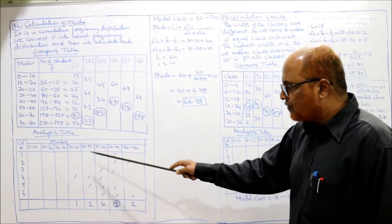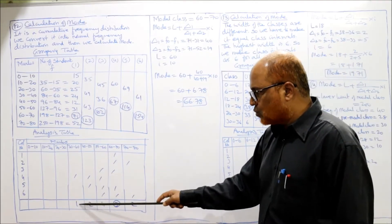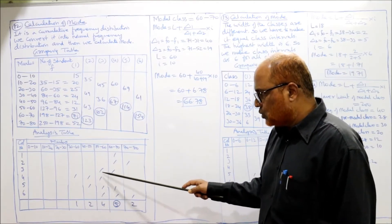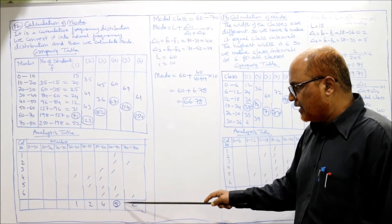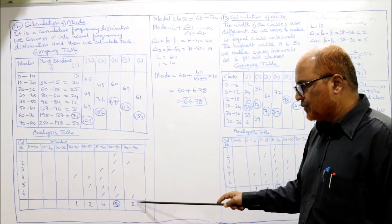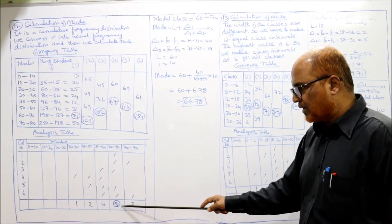Now find out the tally marks: 1, 2, 4, 5, 2. The highest is 5 — unimodal. Modal class is 60 to 70.